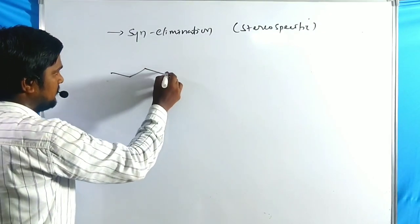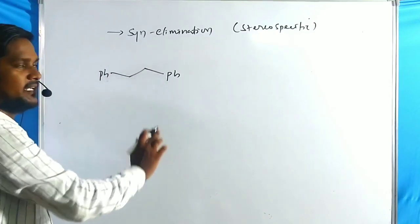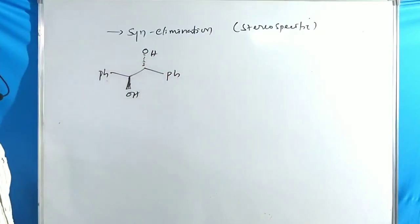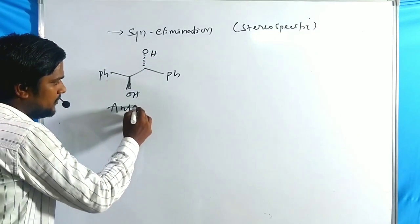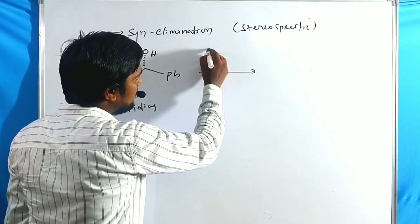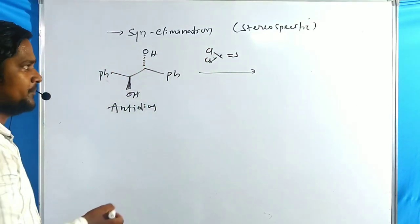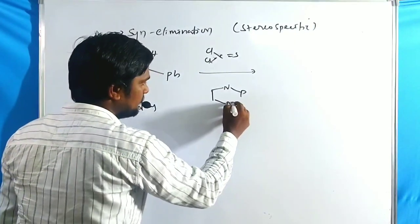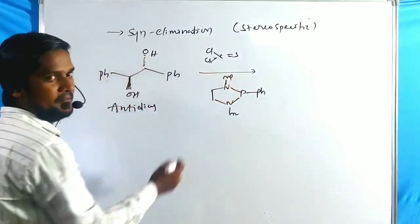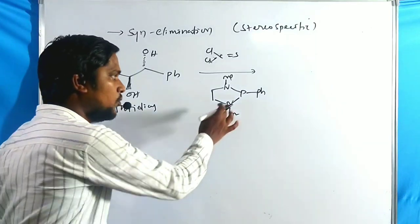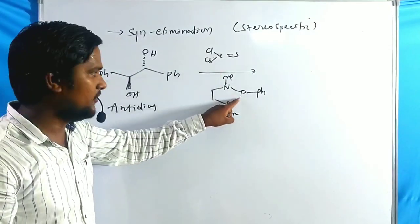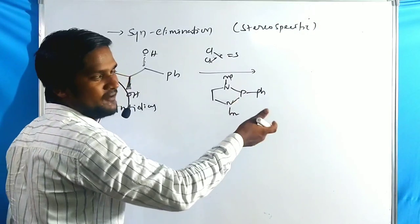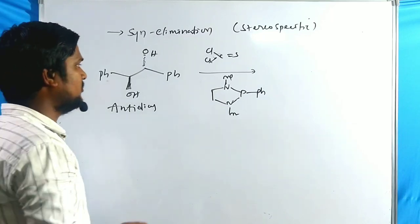Example: 1,2-diphenylethane with OH and OH groups in the anti configuration (anti-diol) is treated with thiophosgene (Cl-C(=S)-Cl), followed by PR3 — specifically 1,3-dimethyl-2-phenyl-1,2,3-diazaphospholidine, the best trivalent reagent for Corey-Winter reactions.